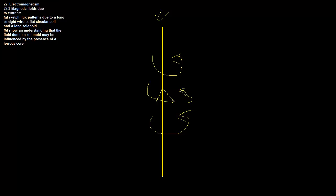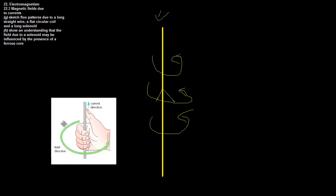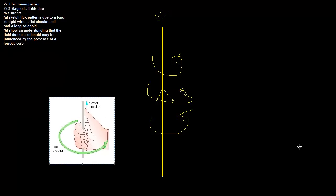Right-hand grip rule - that's how you remember. What you do is very simple: you take your right hand and pretend you're holding onto the wire in question. You point your thumb in the direction of the current - in this case upwards - and the direction your fingers wrap around is the direction of the magnetic field. The reason for this is because electric fields and magnetic fields are really the same thing. Magnetic fields are just moving electric fields, so in a current you have moving charges and that generates a magnetic field.